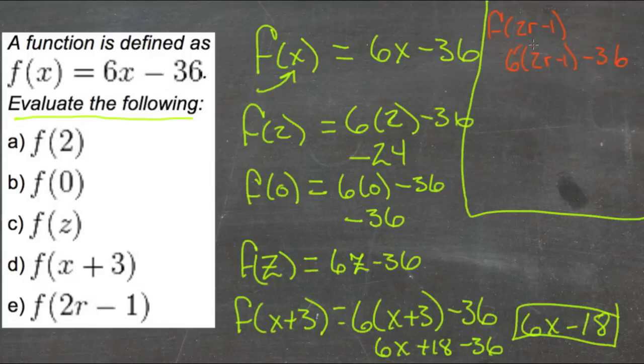And if we distribute that 6 now, we get 6 times 2r, that would be 12r. And 6 times negative 1 would be negative 6, minus 36. Negative 6 minus 36 would be 12r minus 42. So f of 2r minus 1 would be 12r minus 42.